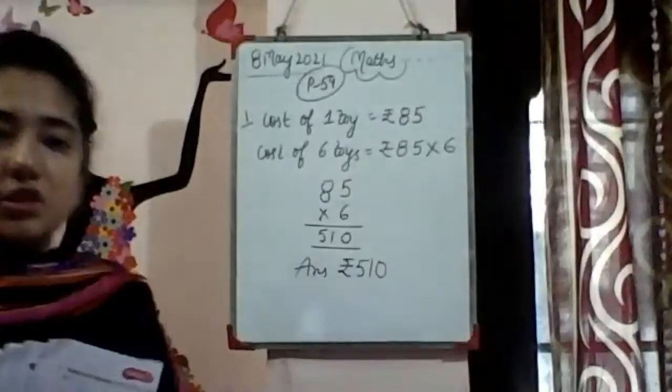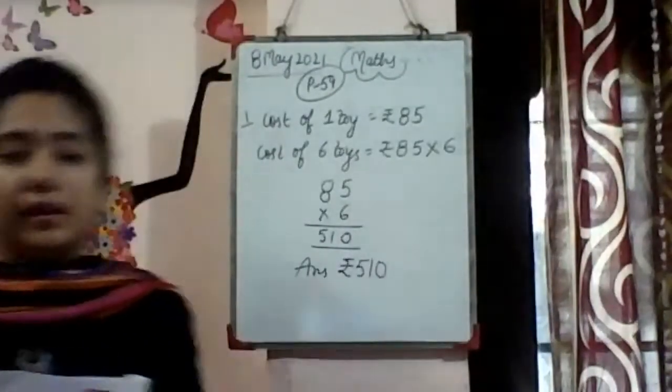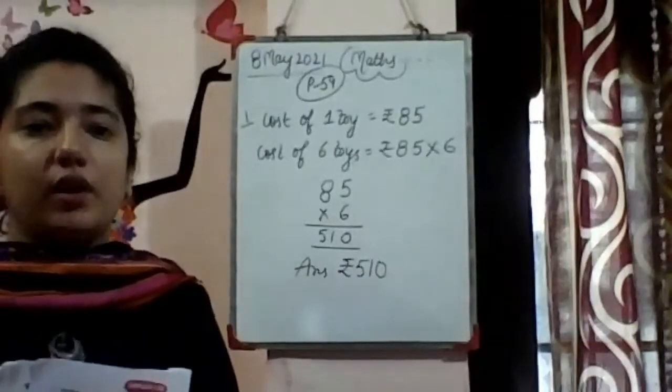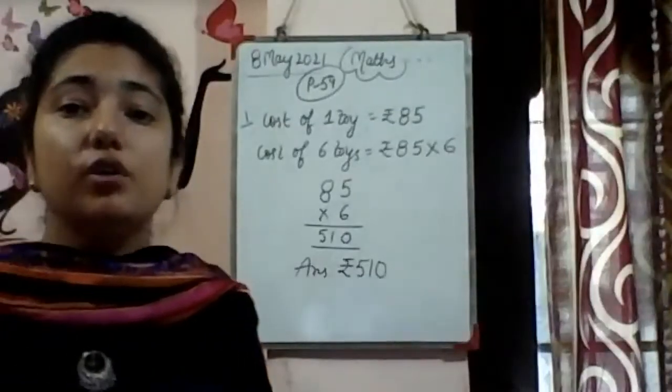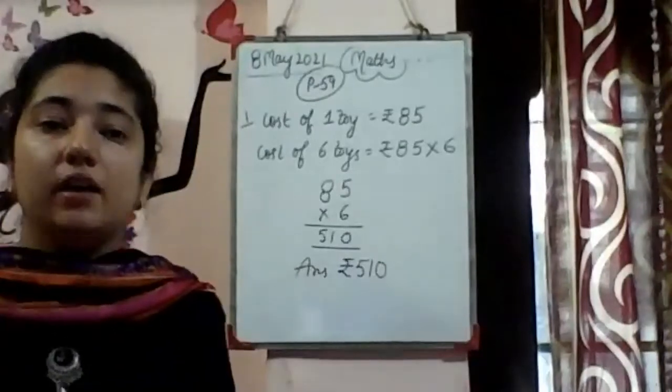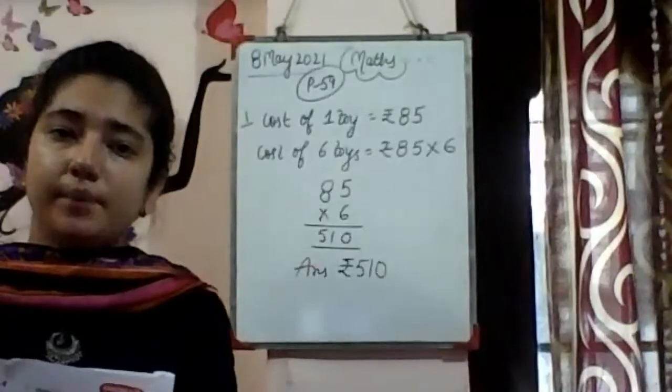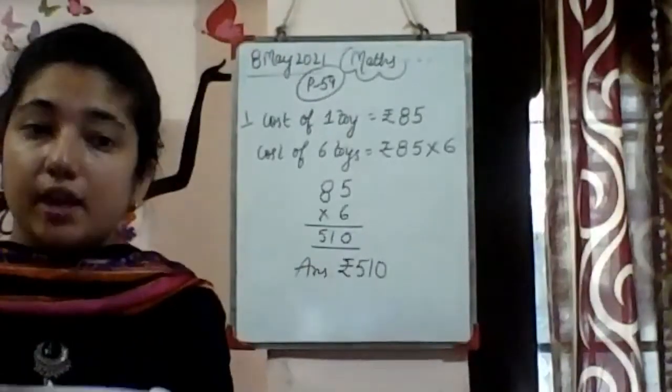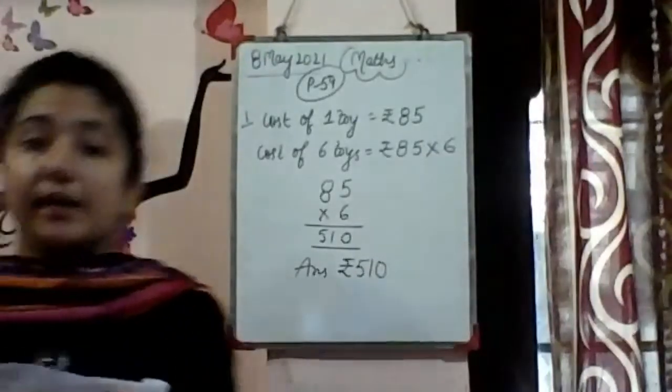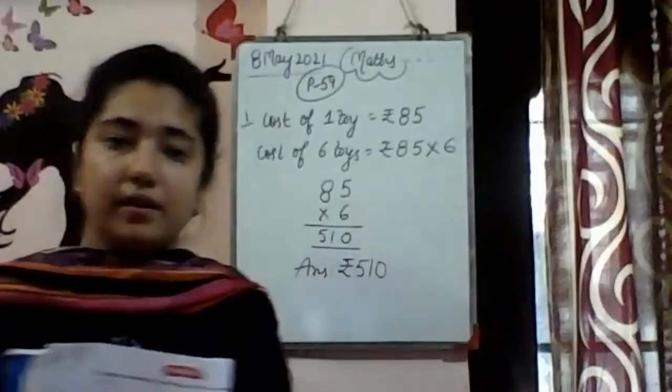We will do this multiplication in the main part, not in rough work, because this multiplication sum carries five marks. 6 times 5 is 30, 0 here, 3 carry. 6 times 8 is 48, plus 3 is 51. 510 is right. Answer is rupees 510.